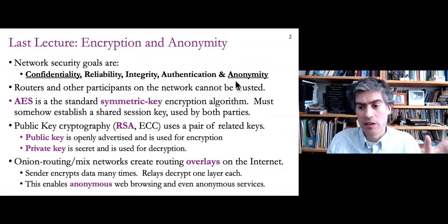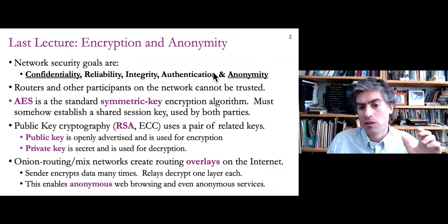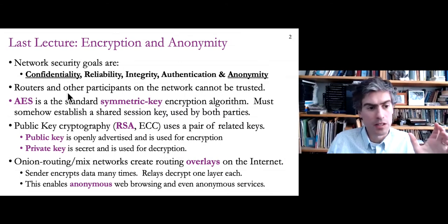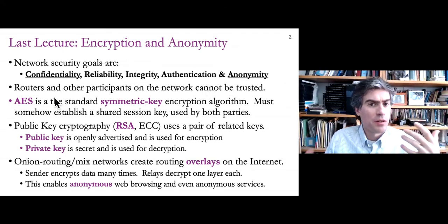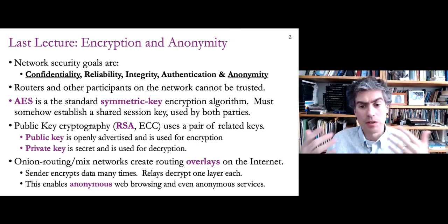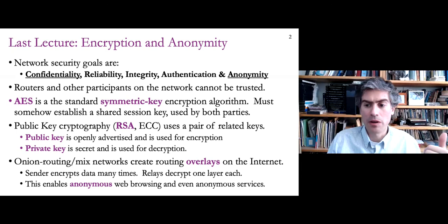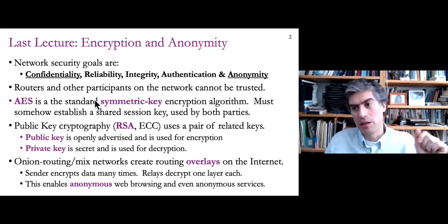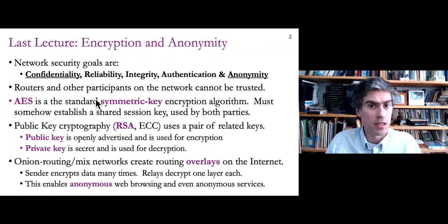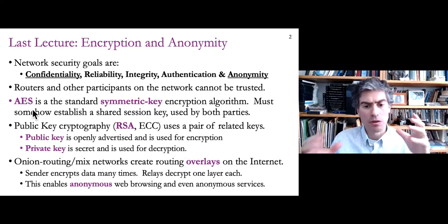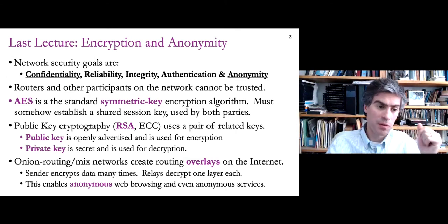Last time we talked about confidentiality and anonymity, which were solved through different means of encryption. Today we're going to address authentication, which is also an encryption-related topic. The reason we talk so much about security in this class is that routers and other participants on the network — perhaps your neighbors on the network — can't be trusted. You have to assume that when you send a packet on the internet, at least someone can see those packets. Encryption allows us to protect the contents of the data from being read by anyone except the endpoint, the receiver of the message.